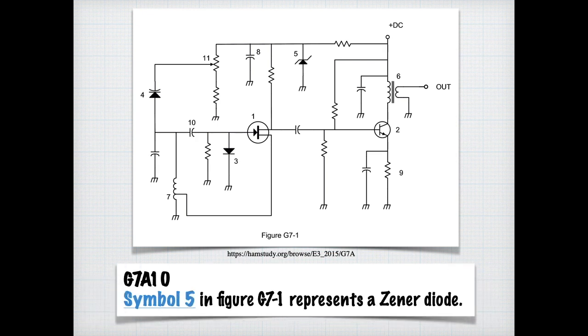You also need to know that symbol 5 in figure G7-1 represents a Zener diode. And you can tell the Zener, because in addition to the straight line, it has a downward slant and an upward slant as well.